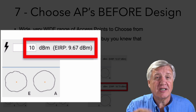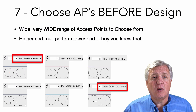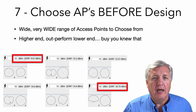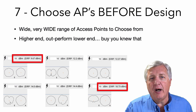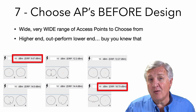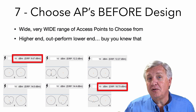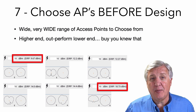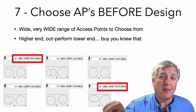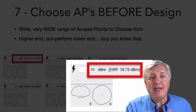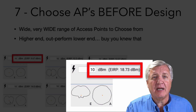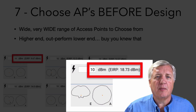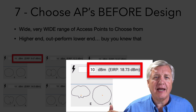All six of these access points are sold into the exact same market. And if you pick one and it's the wrong one, you might have more APs or less APs. The one on the bottom right — we put 10 dB in and we get 18, almost 19 out. It has a positive 9 dB gain.